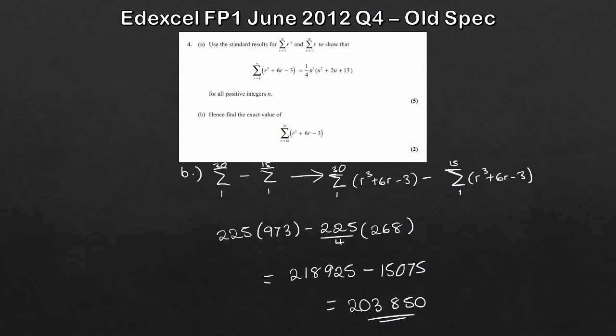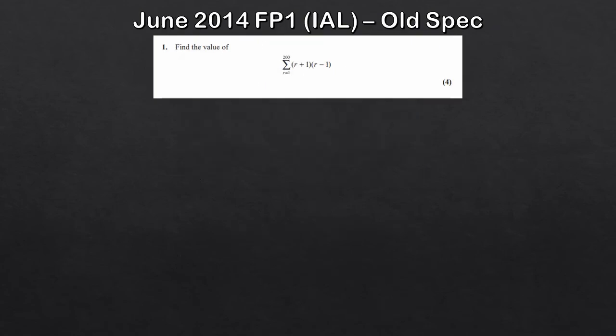That question was from the old Edexcel further maths spec, Further Pure 1 — you can find lots of practice questions there if you want more. So let's move on to the very final question: find the value of the sum from 1 to 200 of r plus 1 times r minus 1, for 4 marks.